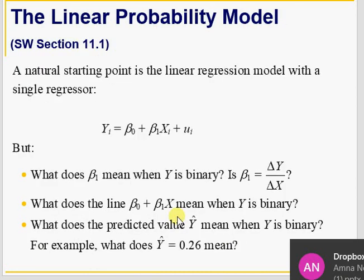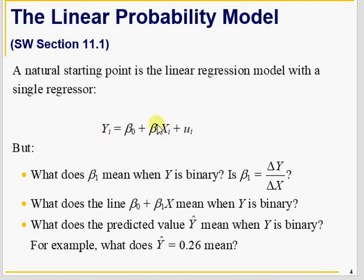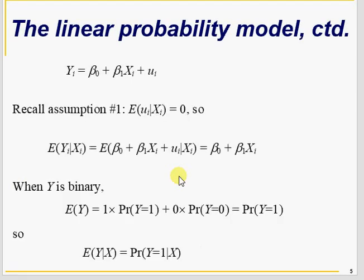In this case, our dependent variable y is a binary variable; x may be continuous or x may be binary. What will be the interpretation of a change in x leading to a change in y? When y was continuous it was straightforward, but here y is 0 or 1. So y-hat equal to 0.26 means that if black equals 1 and white race equals 0, it means 26 out of 100 applicants were denied loans.